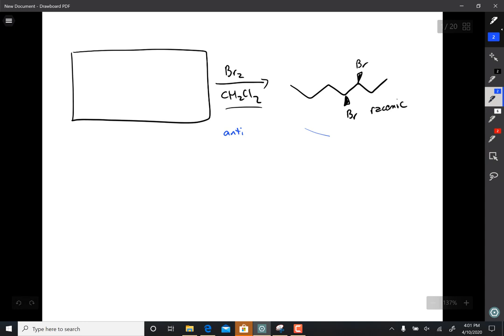If we take a look at our product, those two bromines are both wedges, so they are syn to each other. There are a couple ways we can go about this problem. One way involves redrawing the molecule. In fact, there's a couple different ways you can redraw this molecule.